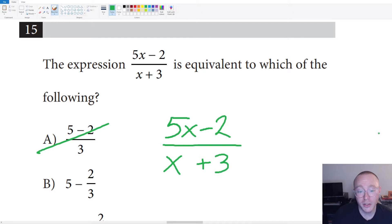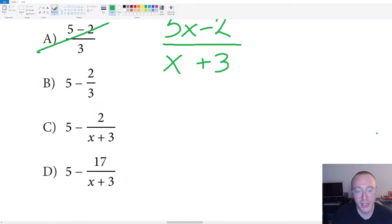So the way that we can do this is by using a process called polynomial division. We can actually go ahead and try to see if we can divide X plus three into five X minus two, much the same way we would do long division.